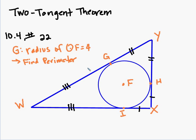Now the challenge here is to find the perimeter of WXY, given that the radius of circle F is 4.